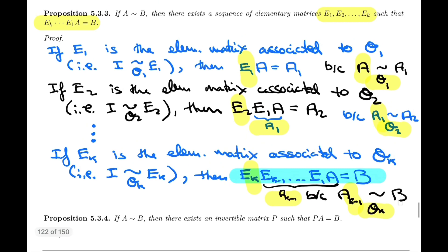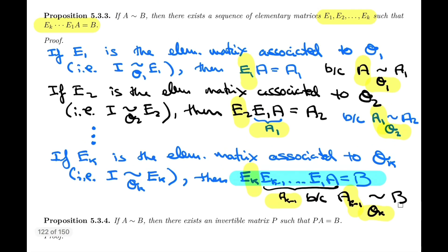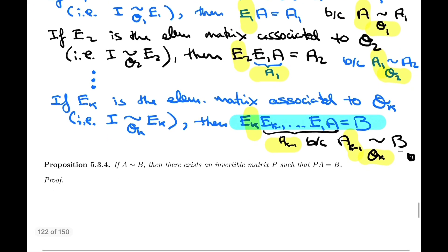This means we've proven our statement — and you can see why the reverse order now. Operation O1 was the first one applied to A, so E1 has to be the matrix closest to A on the left. Then operation O2 gives E2 as the next matrix outward, and so forth working toward Ek. That ends the proof.